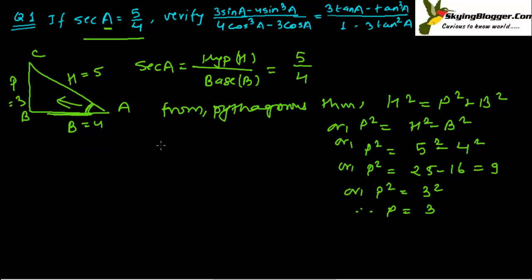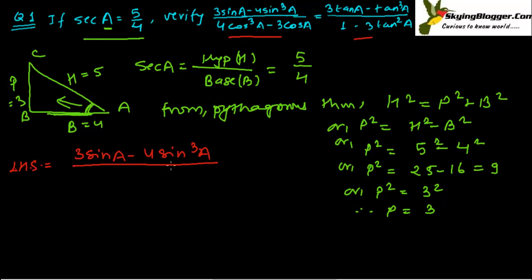Now our second step is to verify. This is our left hand side and this is our right hand side. We have to find the value of both sides and confirm they are equal. Left hand side equals (3 sin A minus 4 sin³ A) divided by (4 cos³ A minus 3 cos A).